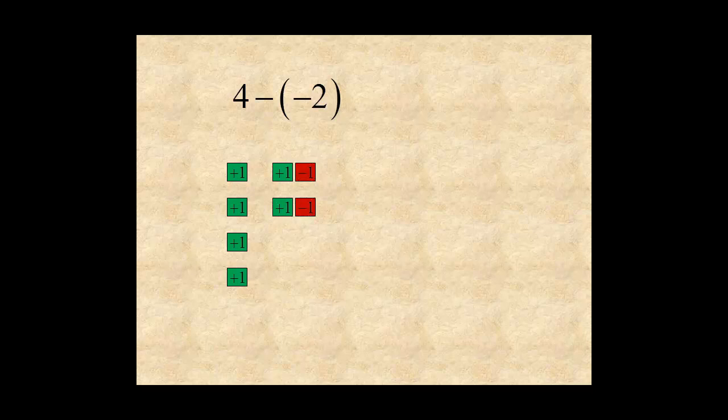Now when you take away two negatives, you have six positive tiles. So you can see that four minus negative two equals six.